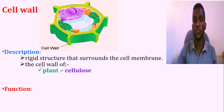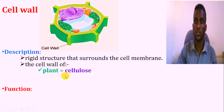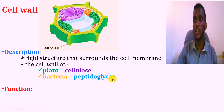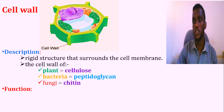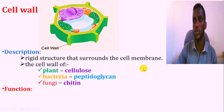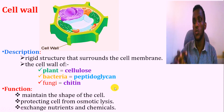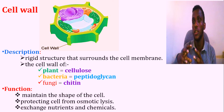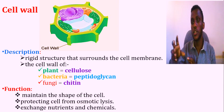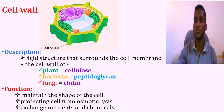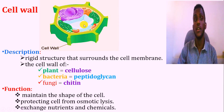The cell wall of plant is made from cellulose, which is beta glucose or the saccharide unit. In the case of bacteria, it is made from peptidoglycan, and fungi the cell wall is made from chitin. The cell wall is important for maintaining cell shape and protecting the cells from osmotic lysis in hypotonic and hypertonic solutions. In addition, the cell wall is important for the exchange of nutrients and chemicals.